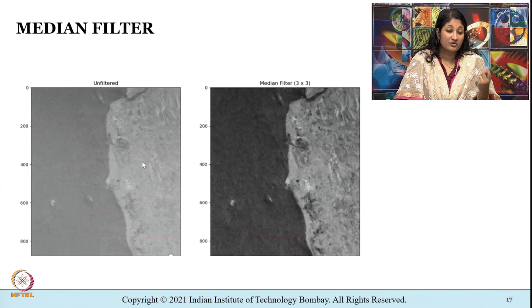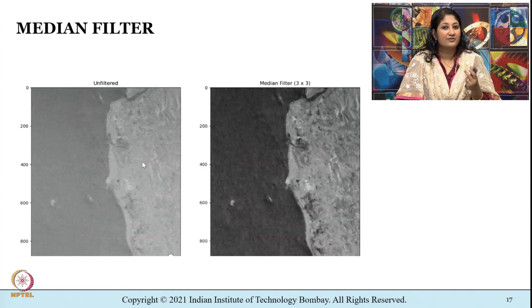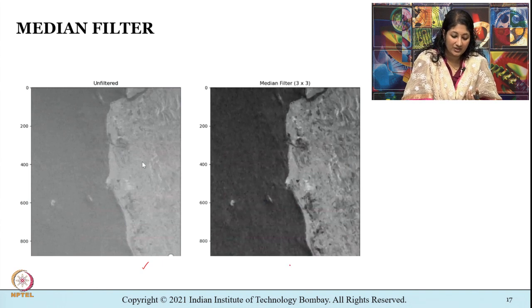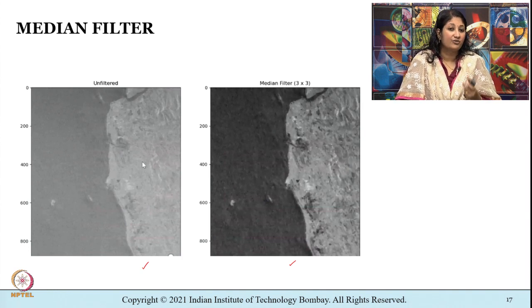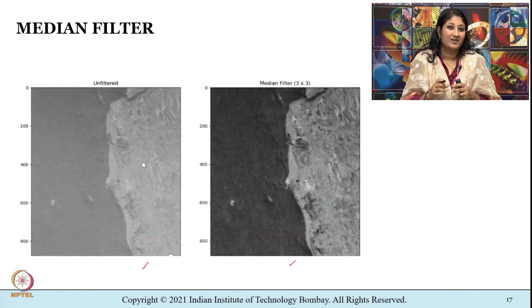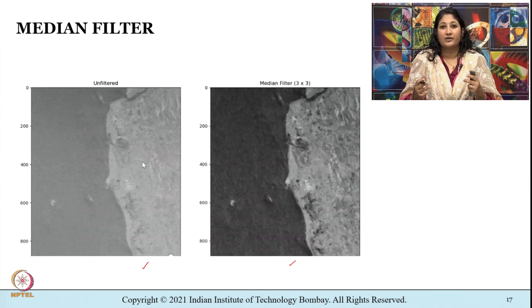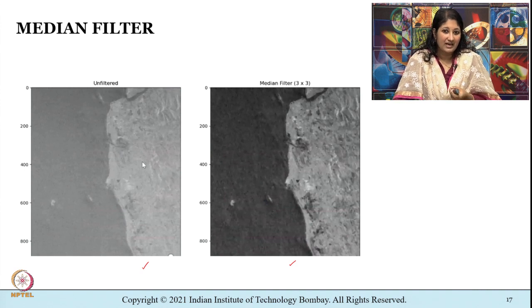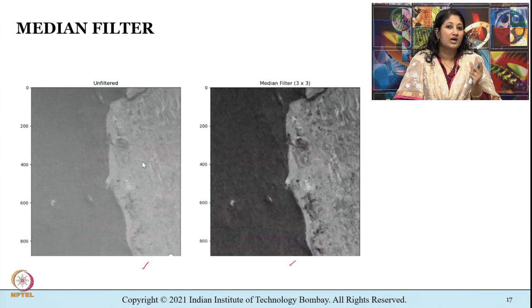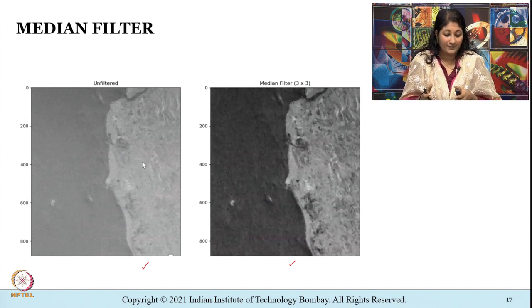We are looking at sample images obtained after applying different kinds of filters. Towards the left is the unfiltered radar image, and towards the right is the image after being subjected to a median filter. As the name suggests, the median filter picks out the median from the window. You can compare the advantages between mean and median filters. These will be hands-on exercises performed as part of the tutorials, where you will learn how to download SAR imagery and how to create and apply filters.